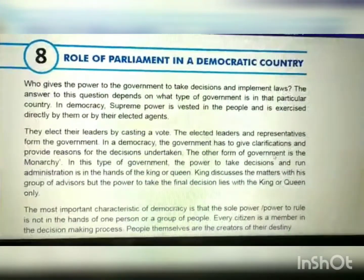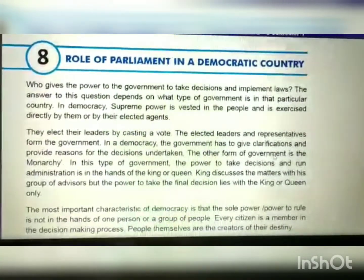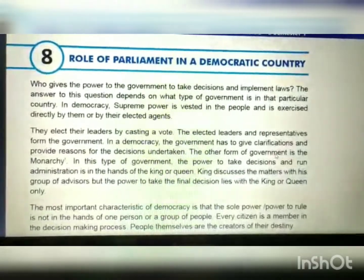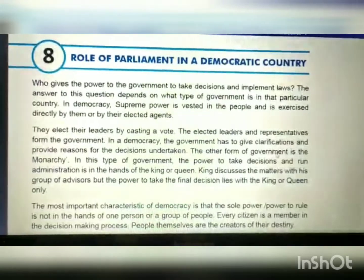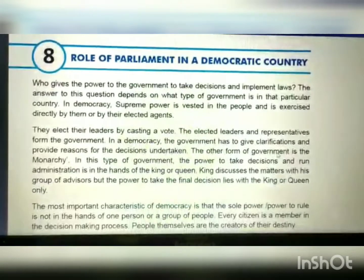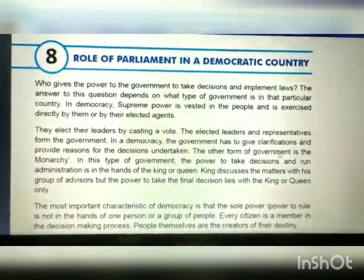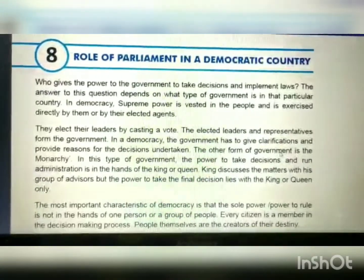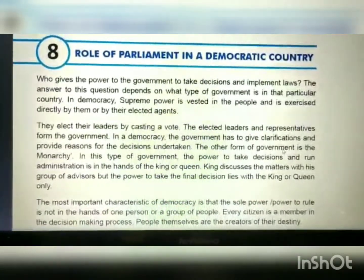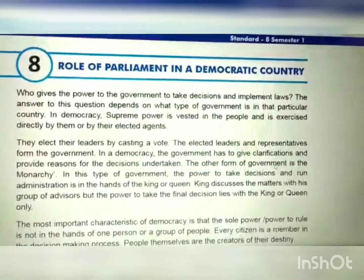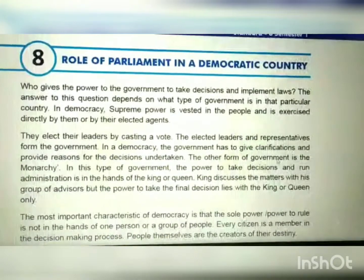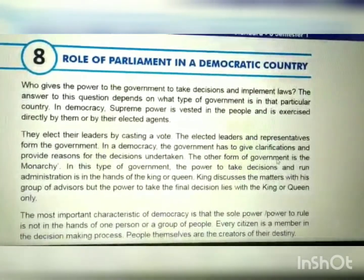The other form of government is the monarchy. In this type of government, the power to take decisions and run administration is in the hands of the king or queen. The king discusses matters with his group of advisors, but the power to take the final decision lies with the king or queen only. In history, there were kings and queens, whereas ours is a democratic country.